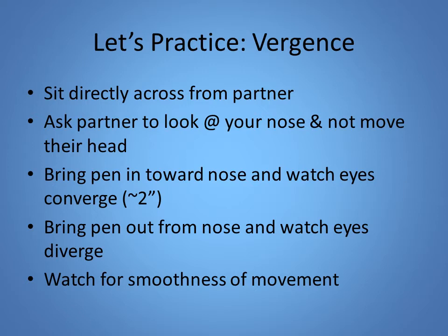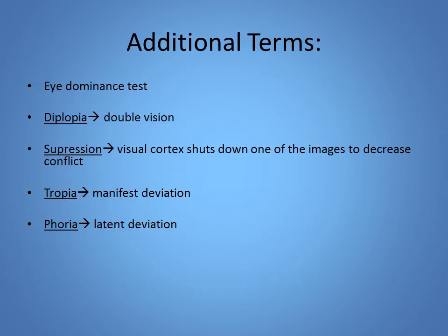Stop now and do those three: pursuits, saccades, and vergence, then come back. We also have a way of testing eye dominance with an eye cover, which is explained in your book. Without being able to show you, I won't go through it here, but please take a look at it in the book.